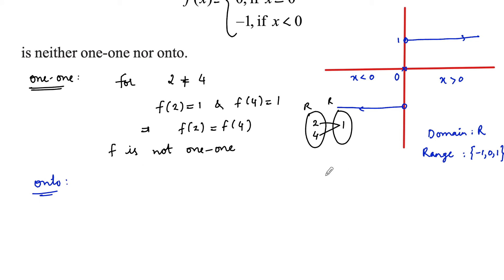Since the codomain is given all real numbers but the range of signum function is minus 1, 0, and 1, suppose if I consider 2 belongs to R, for y equals 2 belongs to R codomain of f, we can say that there is no x belongs to R in domain such that f of x is equal to 2. No value of x gives 2. So we can say 2 does not have any preimage.